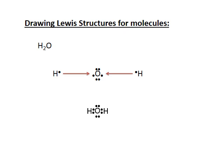Many molecules can be assembled using this puzzle piece method. Checking the full shells: oxygen has eight electrons in its circle, and each hydrogen has two electrons in its circle.